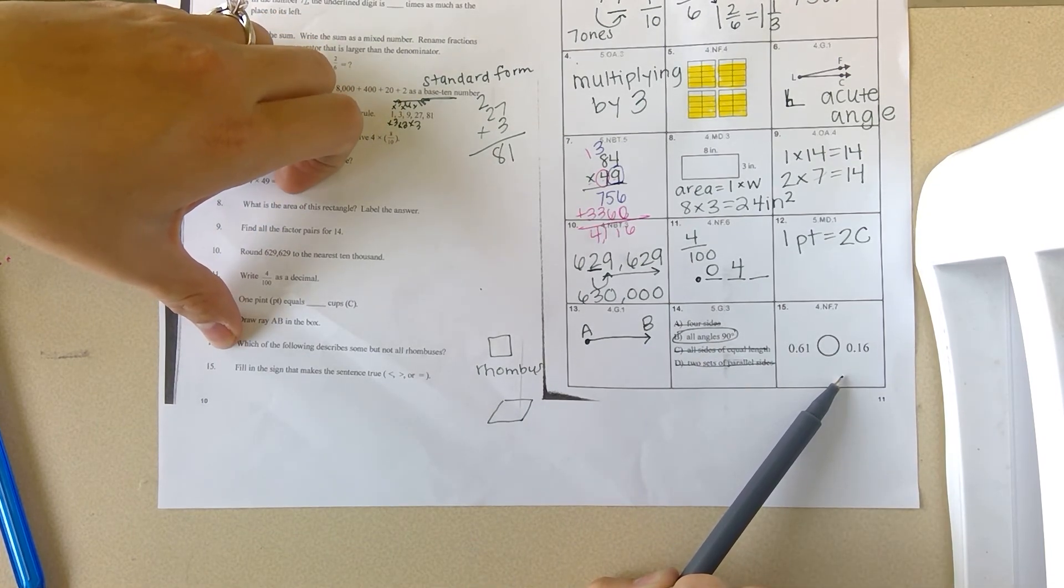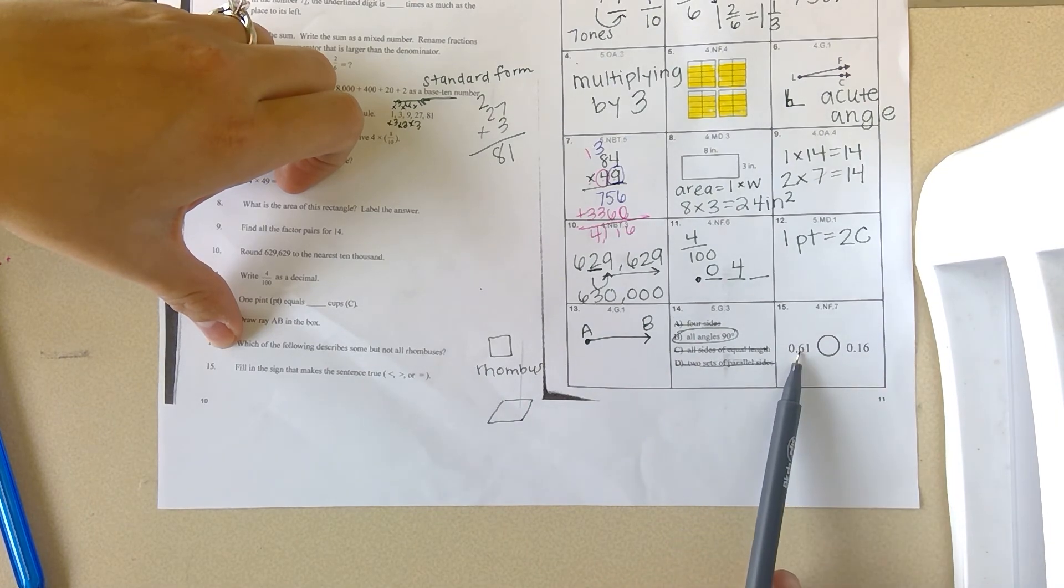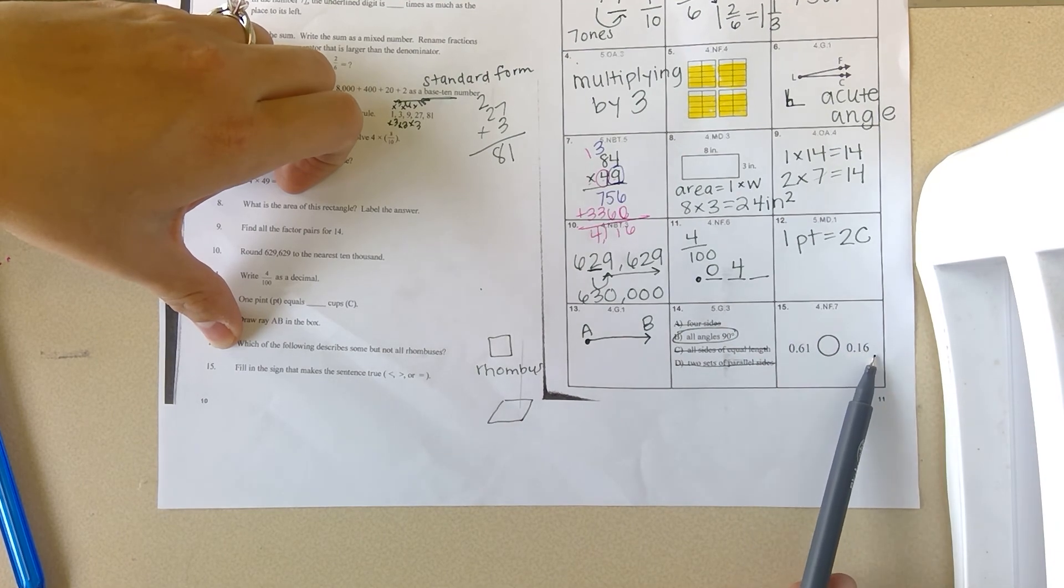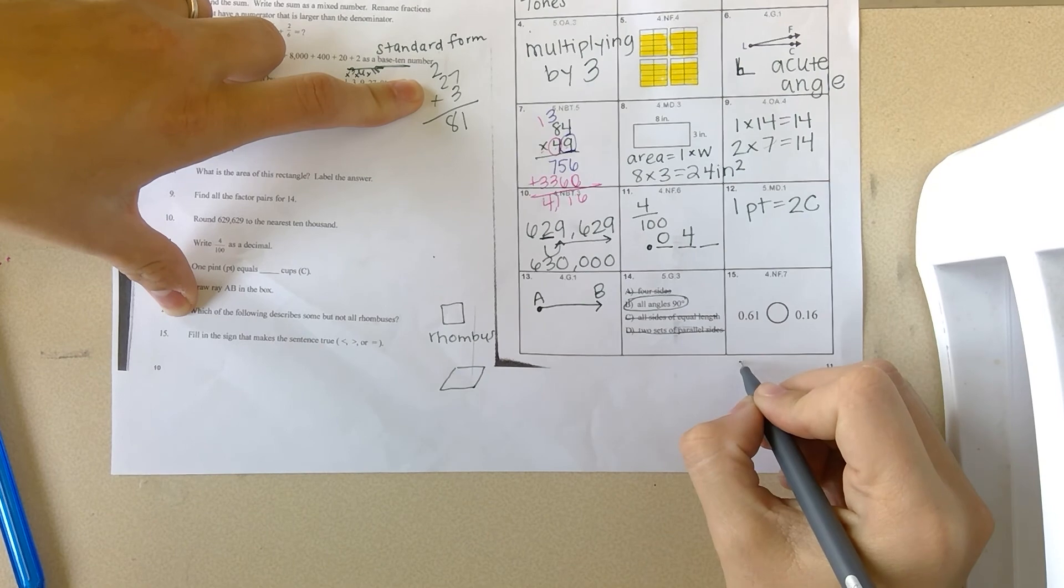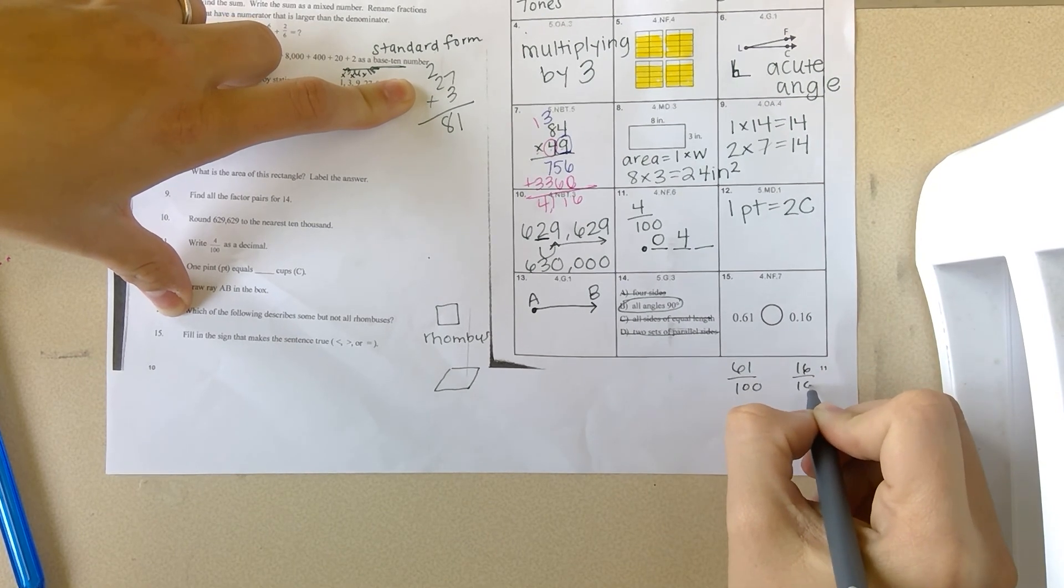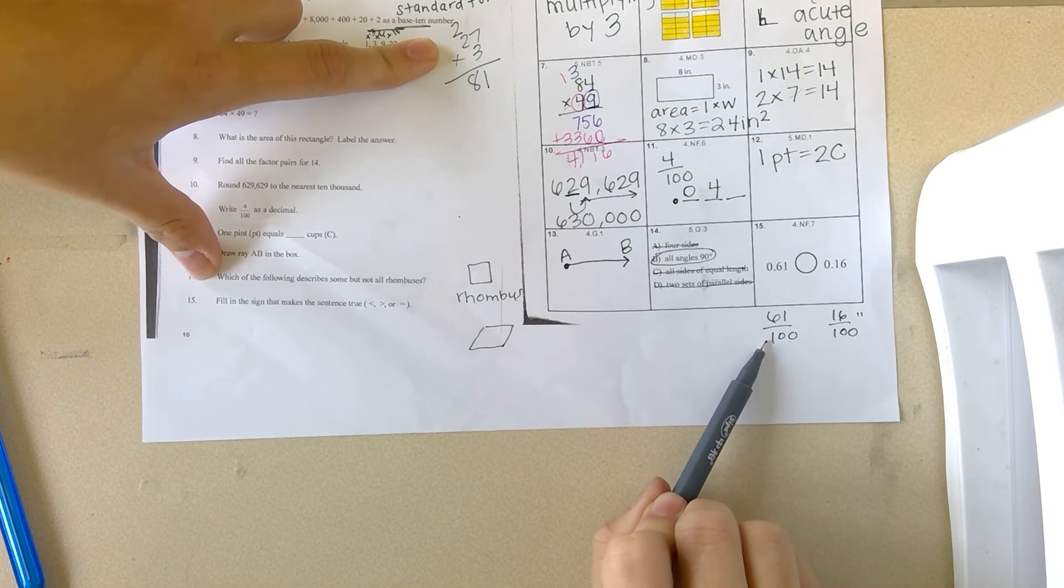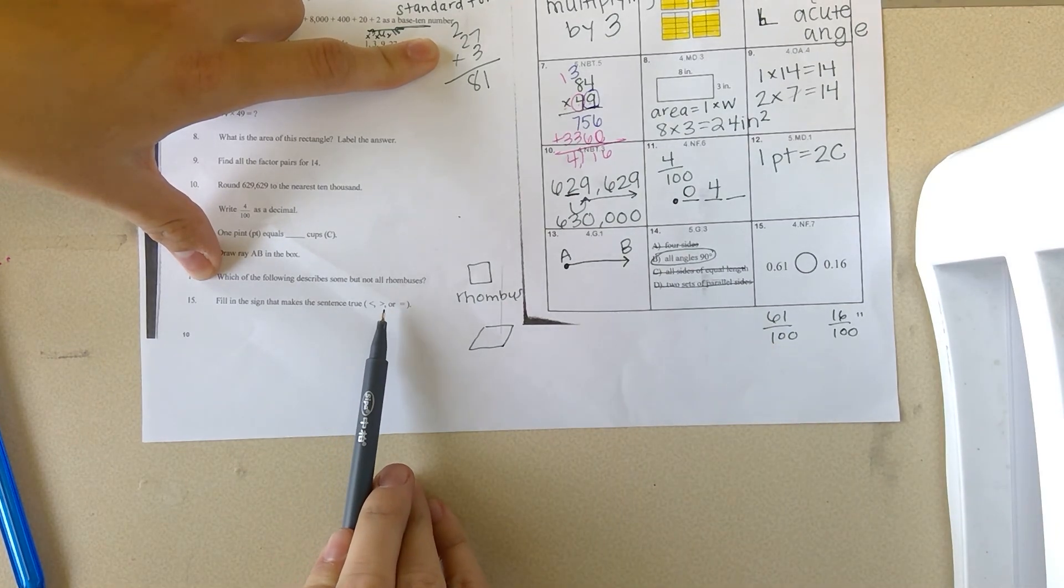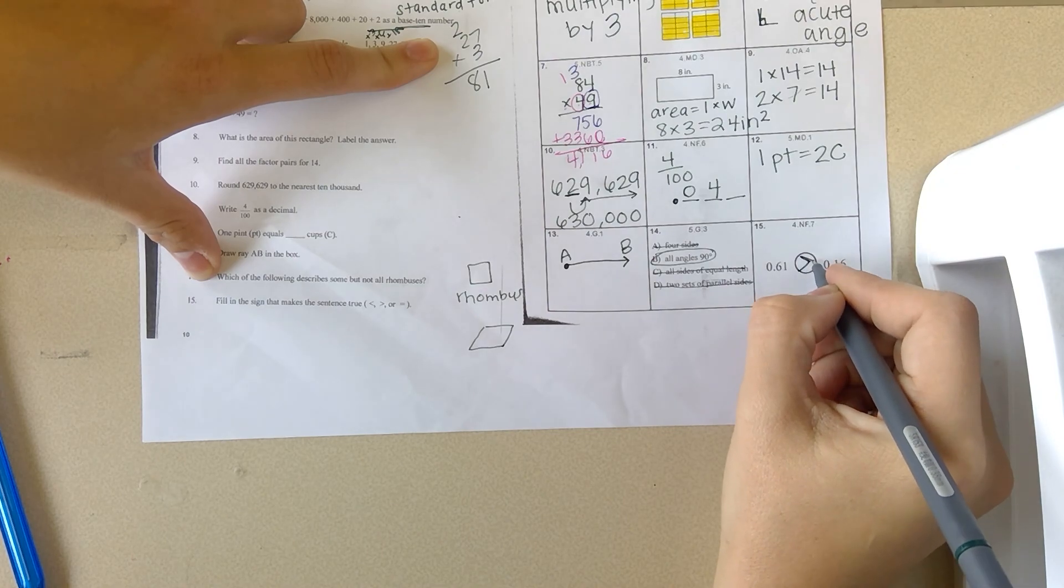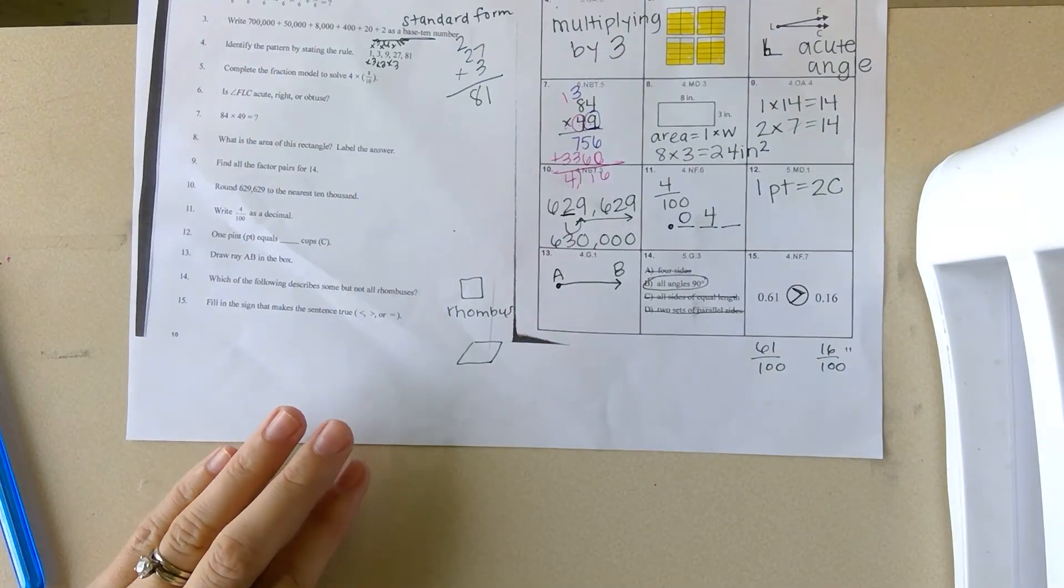Fill in the sign that makes the sentence true. How would you say these? This is the tenths, this is the hundredths. Hundredths is the smallest place value. We would write those as fractions: 61 hundredths and then 16 hundredths. Is 61 hundredths greater than, less than, or equal to 16 hundredths? It is greater, so you would use the greater than symbol. Good job guys.